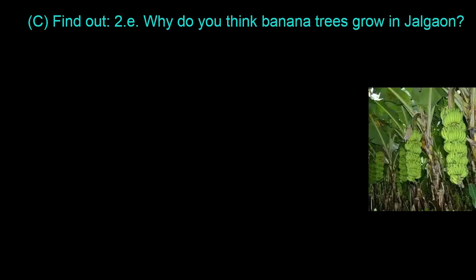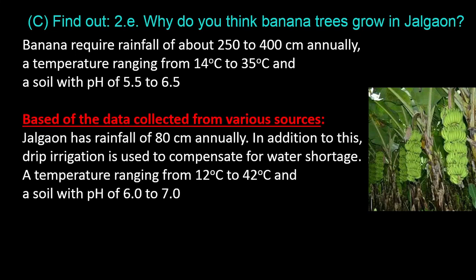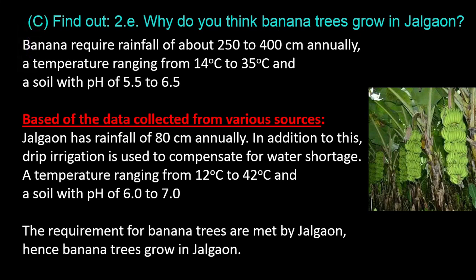Question C, Find Out, 2E: Why do you think banana trees grow in Jalgaon? Banana requires rainfall of about 250 to 400 centimeters annually, a temperature ranging from 14 to 35 degrees Celsius, and a soil with pH of 5.5 to 6.5. Jalgaon has rainfall of 80 centimeters annually; in addition, drip irrigation is used to compensate for water shortage. A temperature ranging from 12 to 42 degrees Celsius and a soil with pH of 6.0 to 7.0. The requirements for banana trees are met by Jalgaon, hence banana trees grow in Jalgaon.